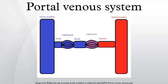In the circulatory system of animals, a portal venous system occurs when a capillary bed pools into another capillary bed through veins, without first going through the heart. Both capillary beds and the blood vessels that connect them are considered part of the portal venous system.